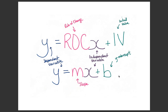Now we're switching our focus to a more mathematical representation of the line, which is y equals mx plus b. Y and x remain the independent and dependent variables, but instead of calling it rate of change, we call it the slope, which is m. And instead of calling it the initial value, we call it the y-intercept, which is represented by the letter b.